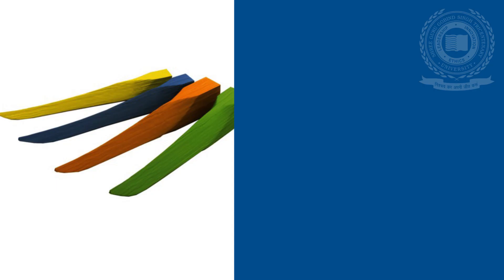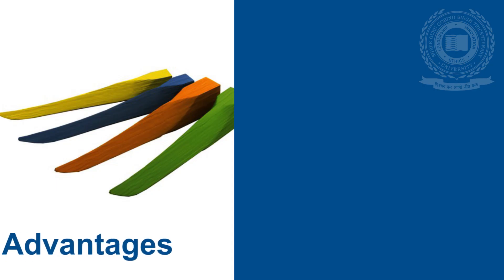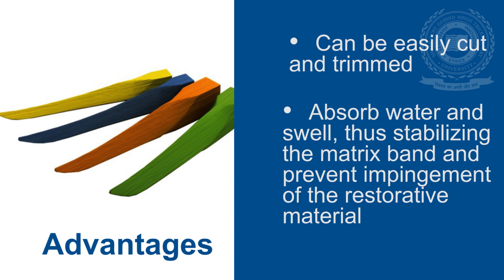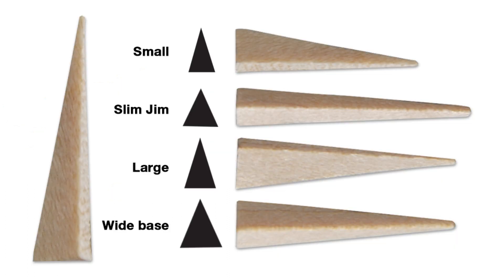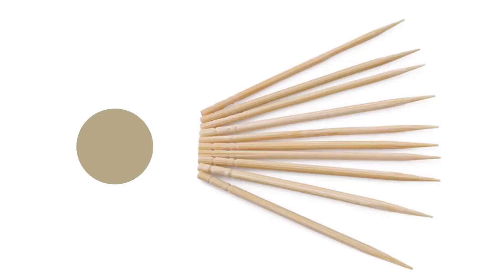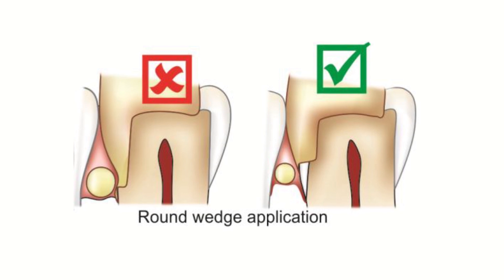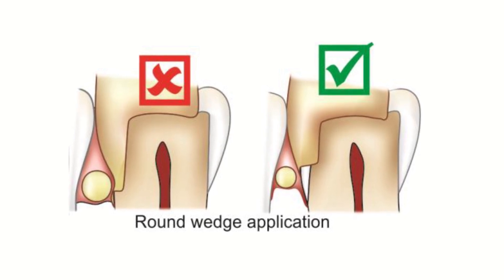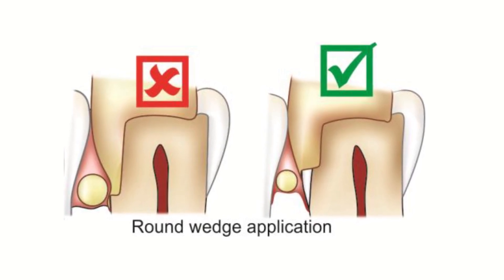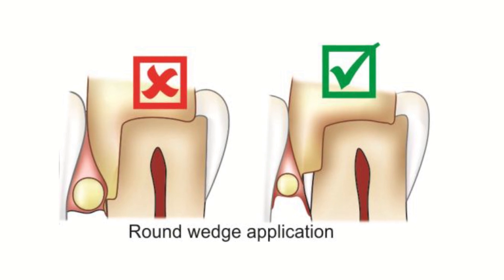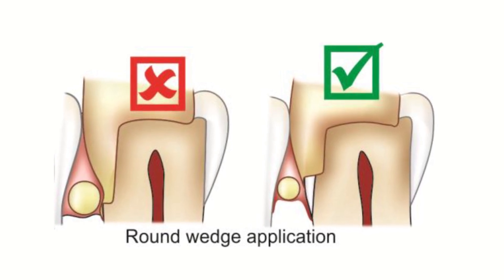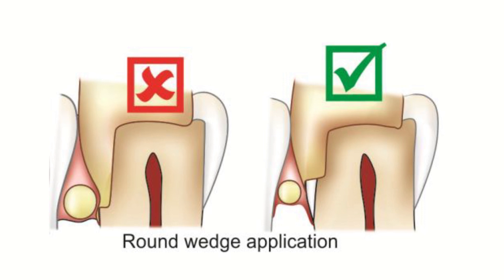Wooden wedges — advantages: They can be easily cut and trimmed. They absorb water and swell, thus stabilizing the matrix band and preventing impingement of the restorative material. Wooden wedges can be triangular or round. The round toothpick wedge is preferred with conservative proximal boxes because its wedging action is more occlusal — that is, near the gingival margin — as compared with the triangular wedge.